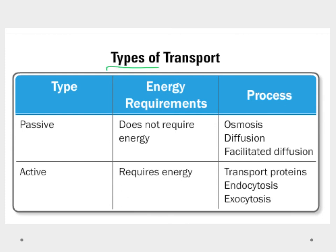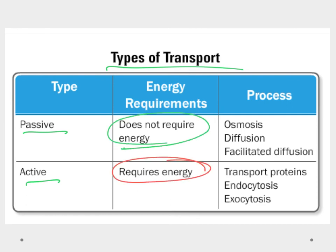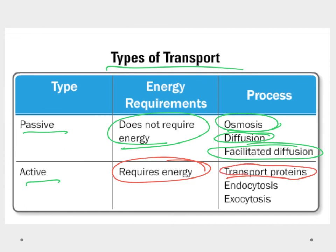To review the types of transport: passive transport does not require energy and includes diffusion, facilitated diffusion, and osmosis (when the diffusing molecule is water). Active transport does require energy and most of the time uses transport proteins. When molecules are too large for protein channels, we use endocytosis to bring them in or exocytosis to get them out of the cell.